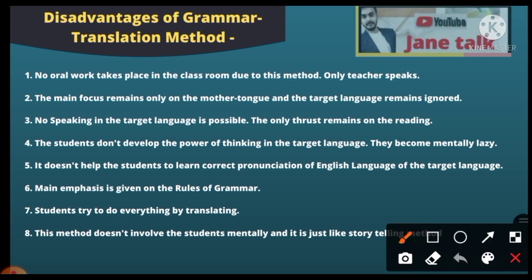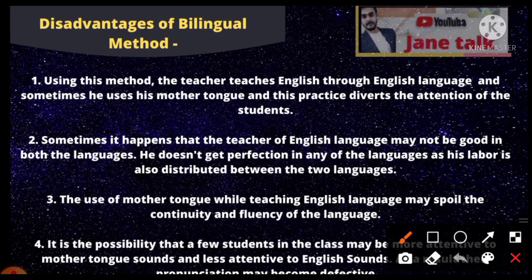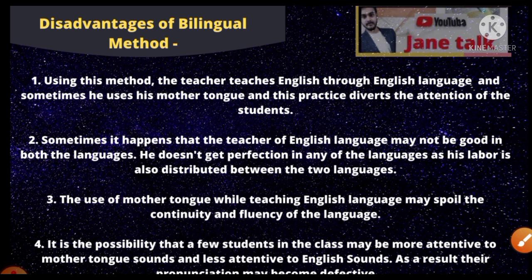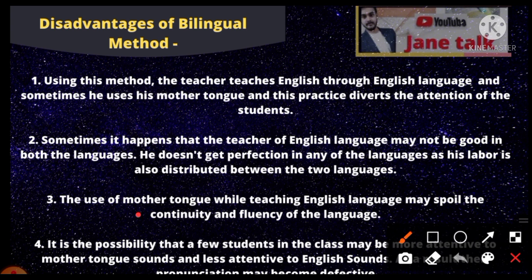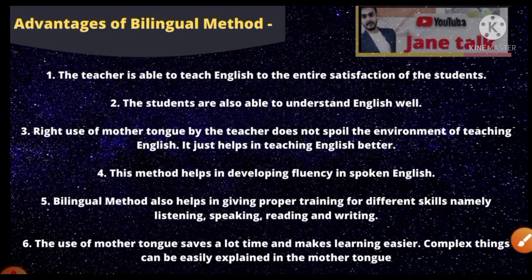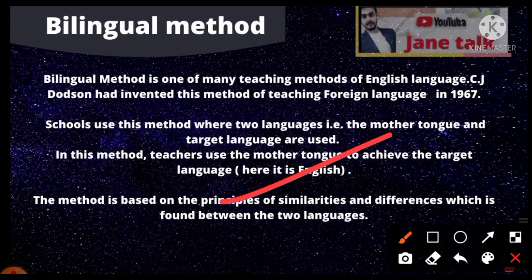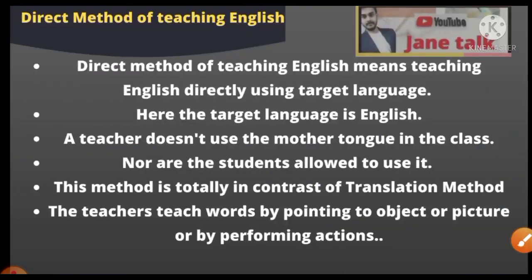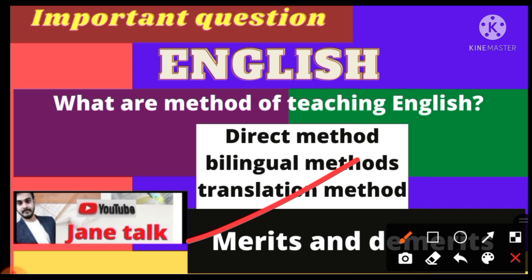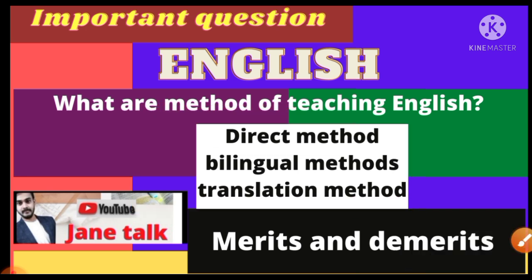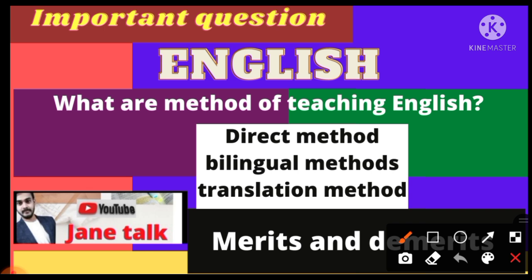So, in the translation method, you first learn grammar, and then translate from your mother tongue — Hindi — into the target language — English. You have seen its advantages and disadvantages, as well as the bilingual method. The key difference is: in the bilingual method you teach English in English but explain in Hindi, whereas in the translation method you translate from Hindi into English. In the next video we will look at the difference between these two methods. Thank you very much, see you in the next video.